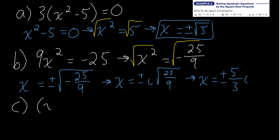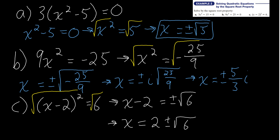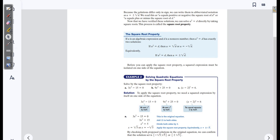Example 2c: (x minus 2) quantity squared equals 6. Taking the square root of both sides, the left side becomes x minus 2, and the right side becomes plus or minus the square root of 6. Adding 2 to both sides: x equals 2 plus or minus the square root of 6. This example will segue us into the next part of the section.